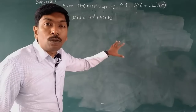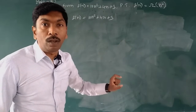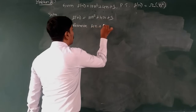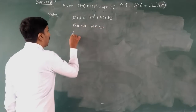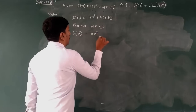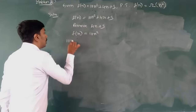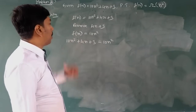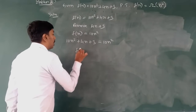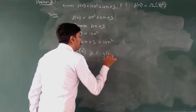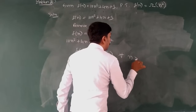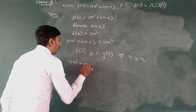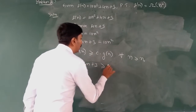So f(n) = 10n² + 4n + 3. Here 10n² is the dominant term. We remove the lower-order terms 4n + 3, so f(n) = 10n². Now we apply the equation: f(n) ≥ c · g(n), for all n ≥ n₀. Substituting: 10n² + 4n + 3 ≥ 10n².